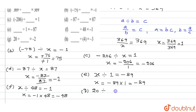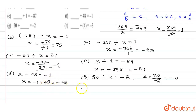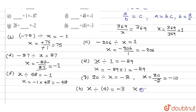Question g: 20 divided by x equals minus 1. So x equals 20 upon minus 2, which gives minus 10. Question h: x divided by 4 equals minus 3, so x equals 4 multiplied by minus 3, which equals minus 12.